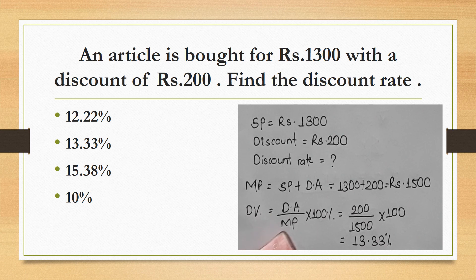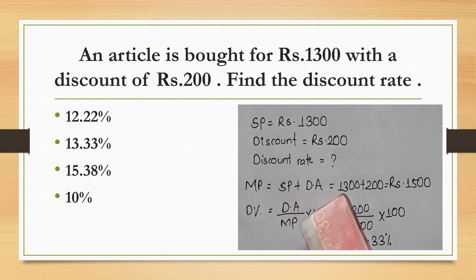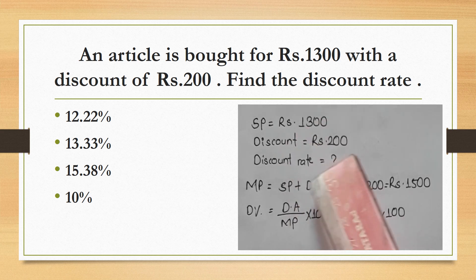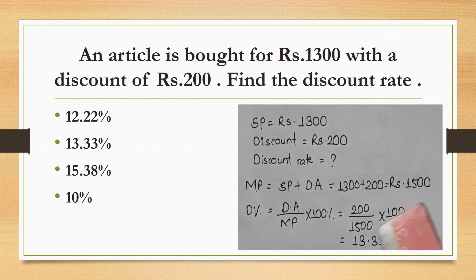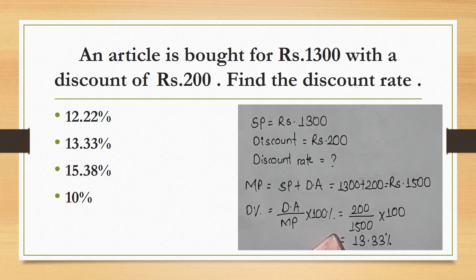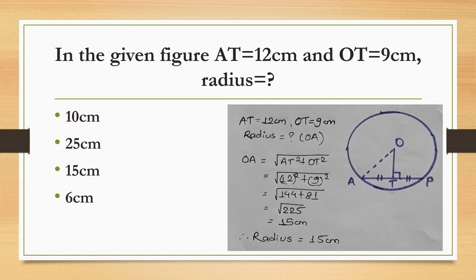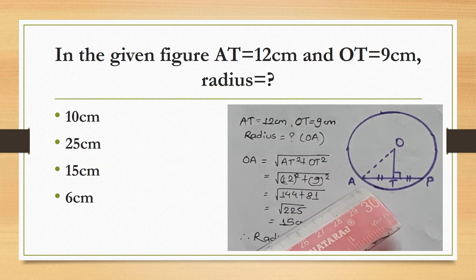To find the discount rate, we need the marked price (MP). First, MP = SP + discount amount = 1300 + 200 = Rs.1500. Now discount percent = (discount amount / MP) × 100 = (200 / 1500) × 100 = 13.33%.